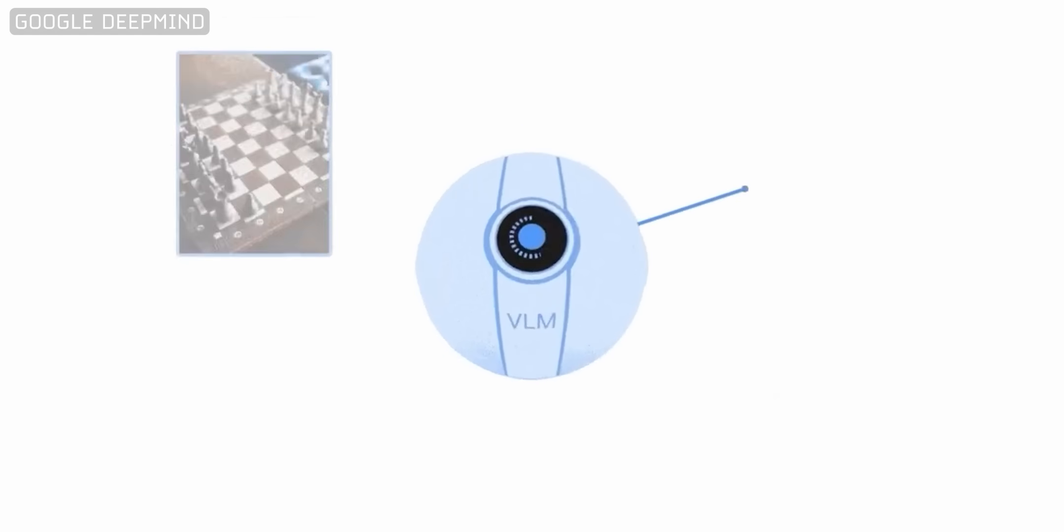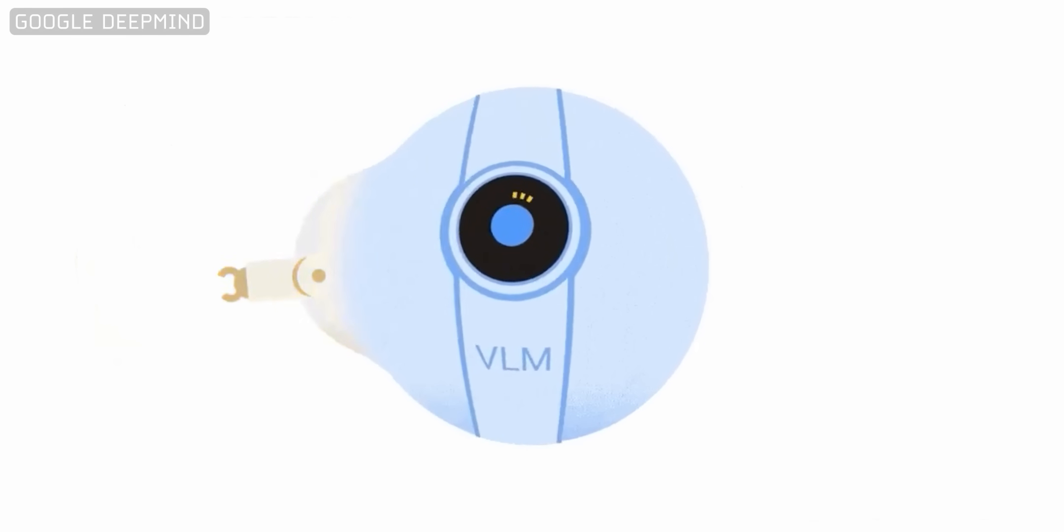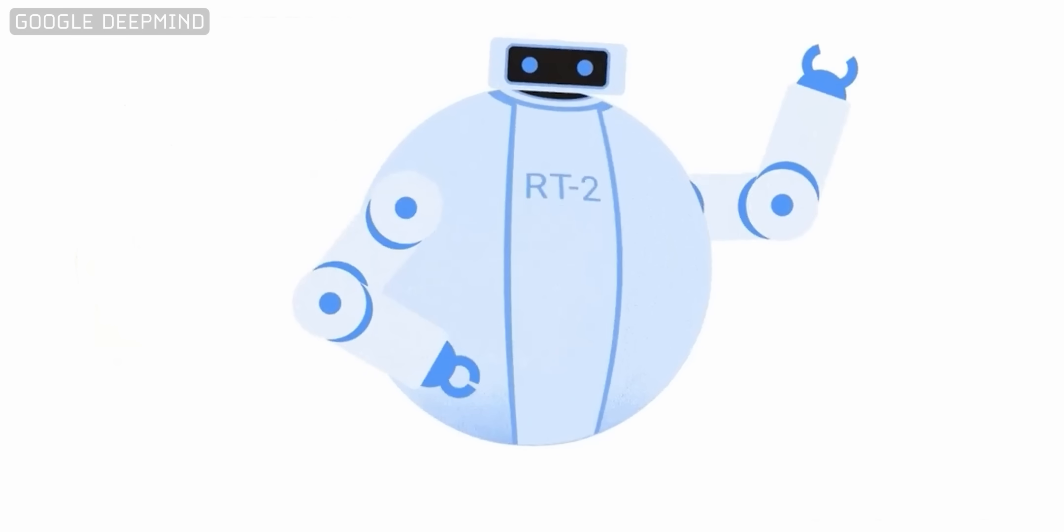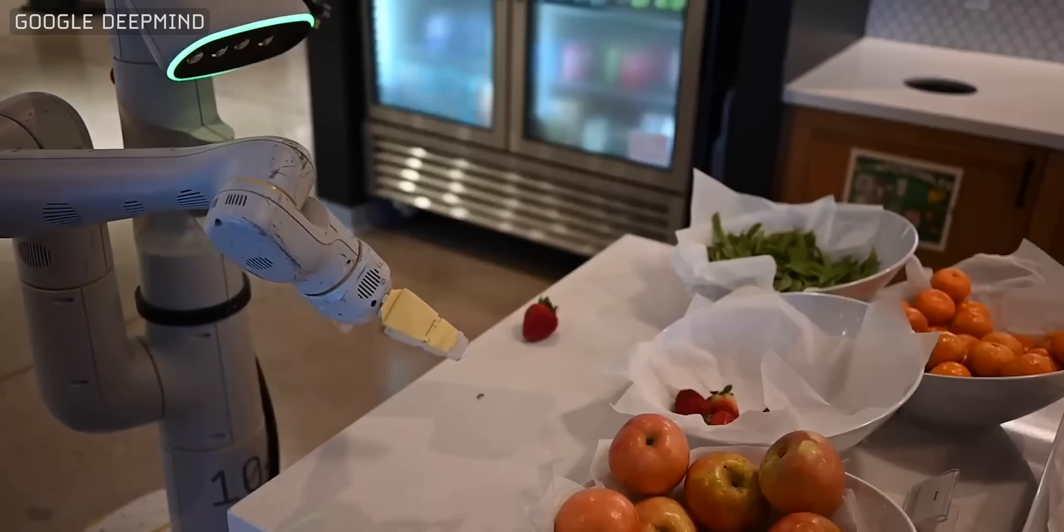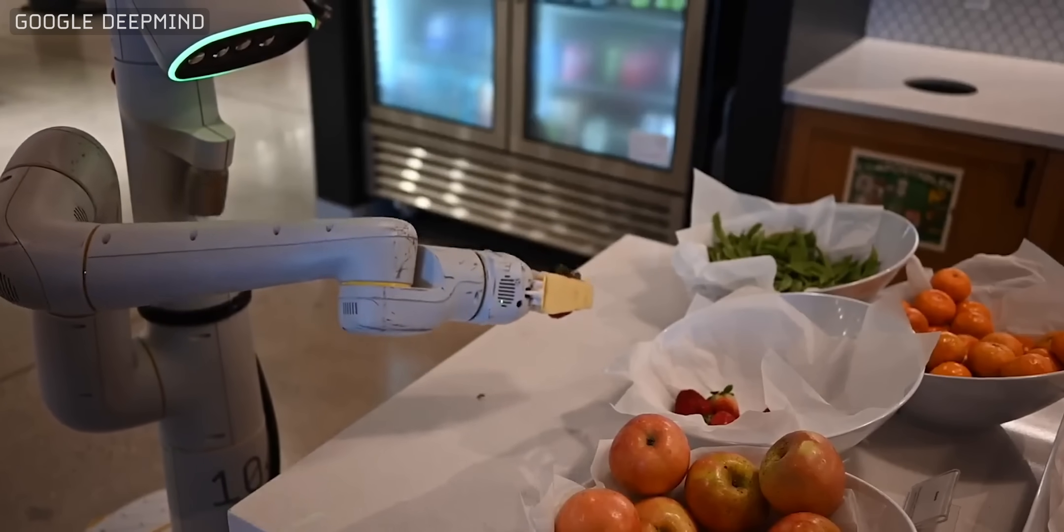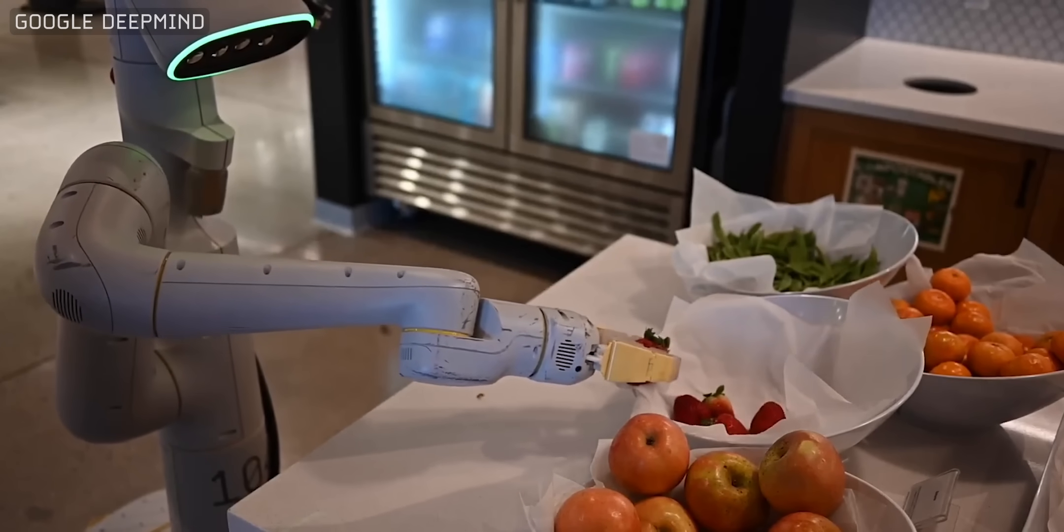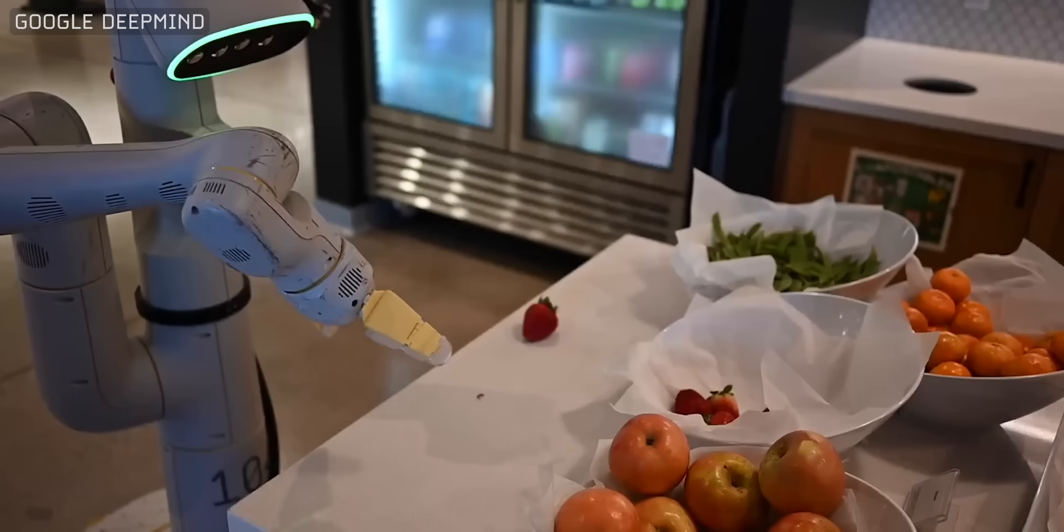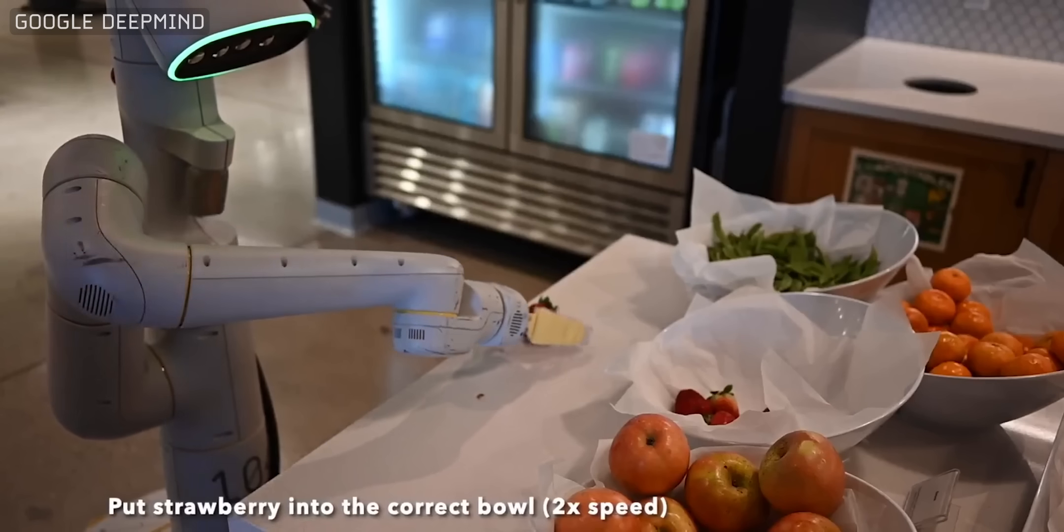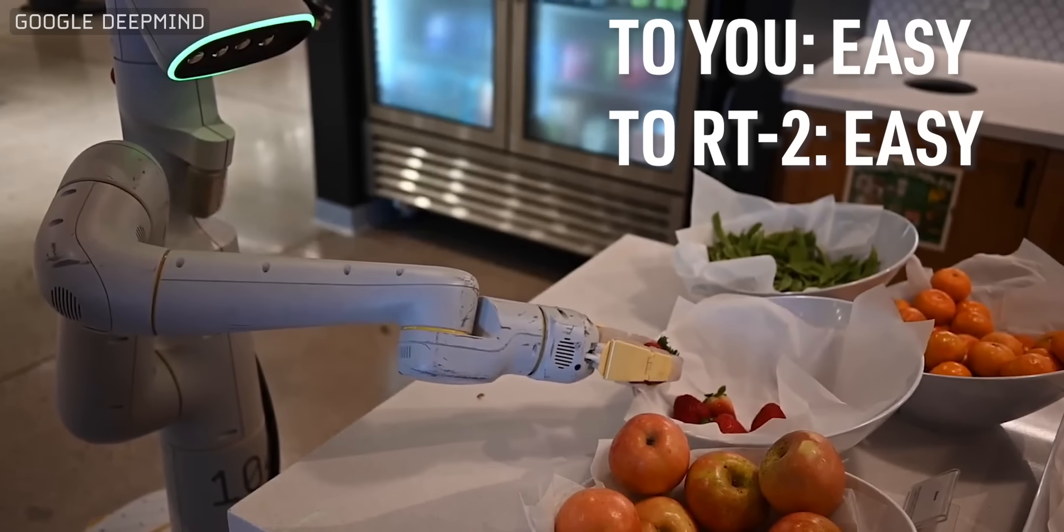But, since DeepMind's RT2 model uses text and pictures from the web to learn how people communicate, the robot already understands what strawberries look like and what we're most likely asking it to do when we say place the strawberry in the correct bowl. The robot will figure out what correct means in context, even though it was never trained on this specific task. In this case, the correct bowl is the one that already has strawberries in it. But again, we didn't tell it that. The robot reasoned that out itself.